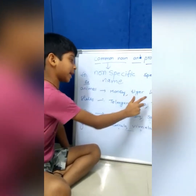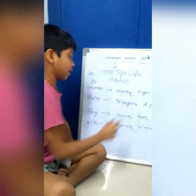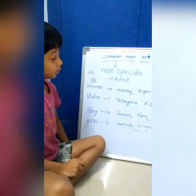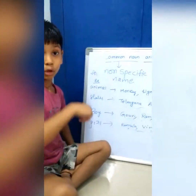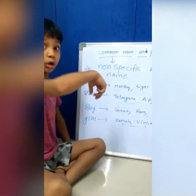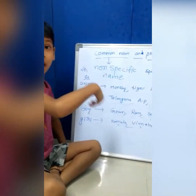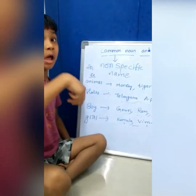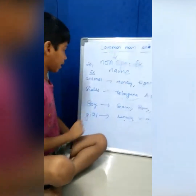Monkey, tiger, lion — those are called proper nouns.